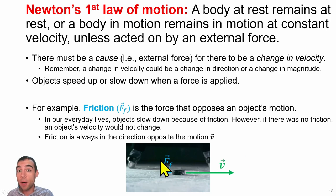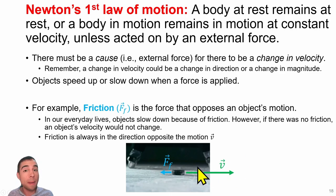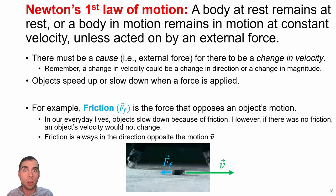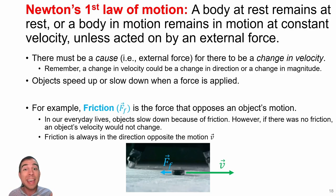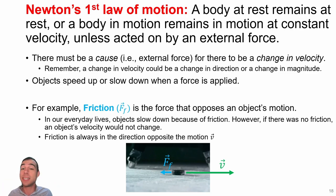For example, for a hockey puck sliding along an ice rink, we could imagine that puck going on forever — an object remaining in motion at constant velocity unless acted on by an external force. But in reality we have a little bit of friction between the hockey puck and the ice, and this external force is what causes the object to change its motion.